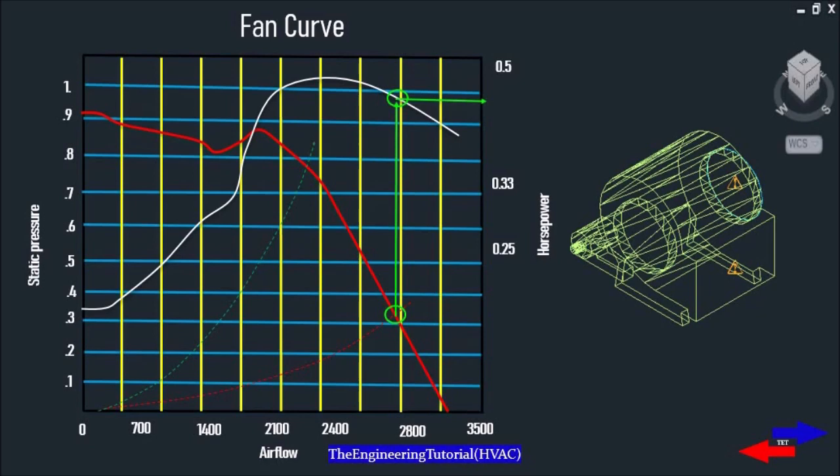The blue horizontal axis shows the airflow. The yellow vertical axis is the static pressure which is measured in inches of water column. The solid white line is the horsepower versus CFM curve. The red dotted line